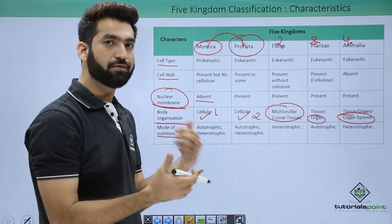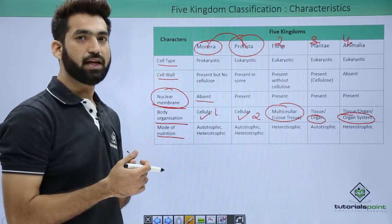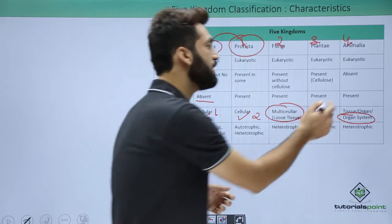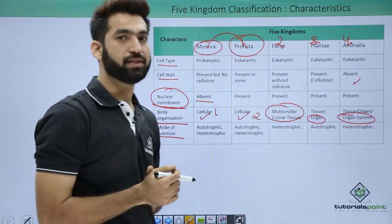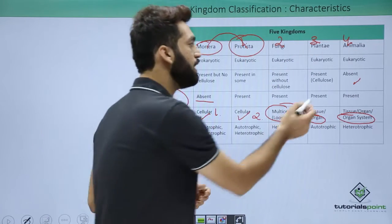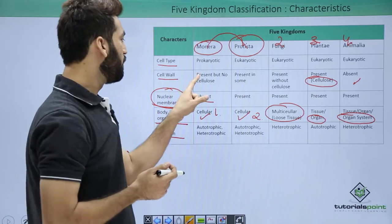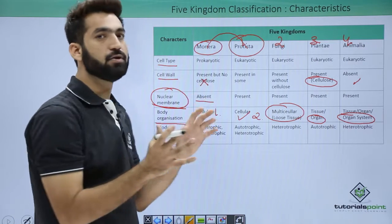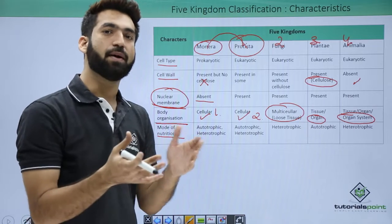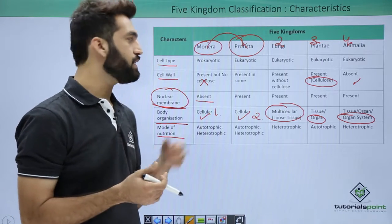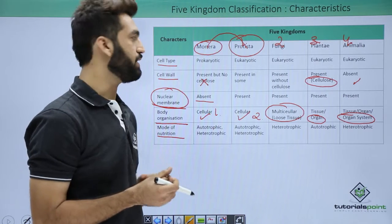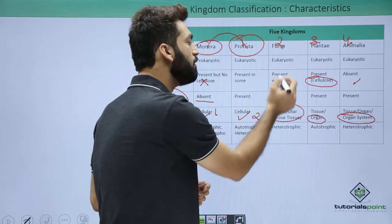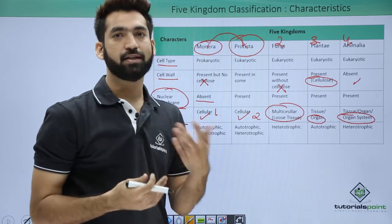Regarding cell walls: animals have no cell wall. In plants, the cell wall is present and made of cellulose. In kingdom Monera, the cell wall is present but not made of cellulose — it is made of peptidoglycan, which we will discuss in detail when covering kingdom Monera. The cell wall of Fungi is also not made of cellulose; it is made of chitin, another polysaccharide.